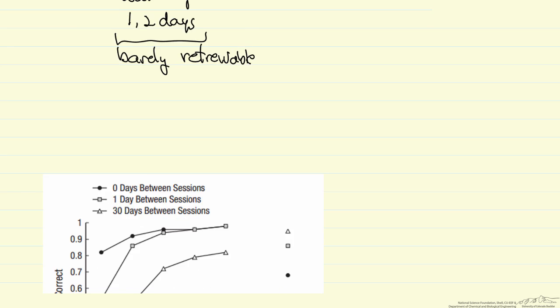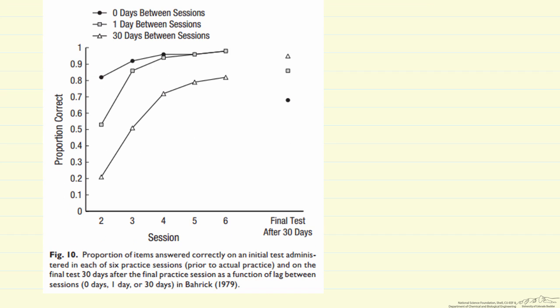One of the studies that looked at this is fairly dramatic in the differences. So this is looking at the proportion of answers that were correct, and this is doing a test. There were six study sessions for the black circles. There were no days between those sessions, and the retention percent correct looks really good.